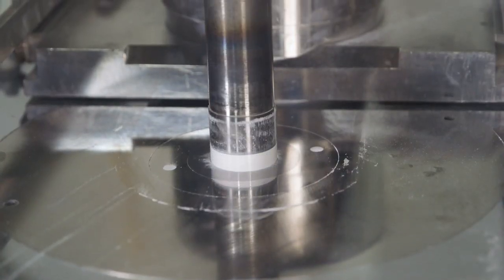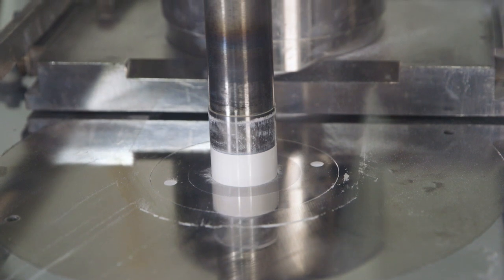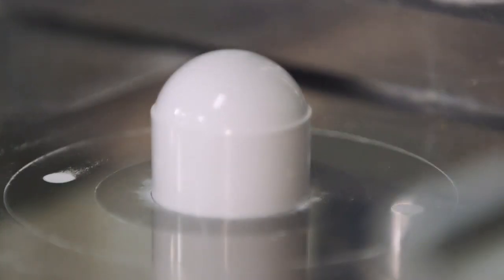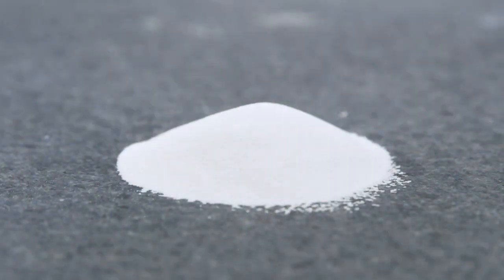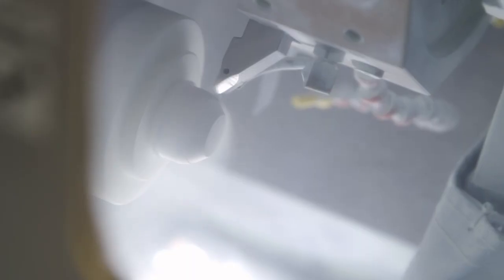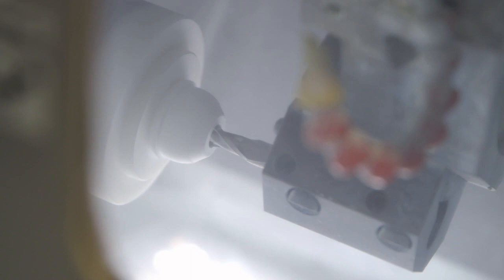After the initial pressing, the part has a smooth finish and is the consistency of chalk. Next, the pressed part heads to a CNC lathe. The lathe creates the general shape of the femoral head.